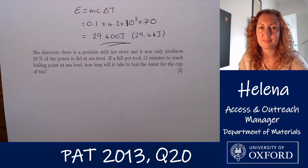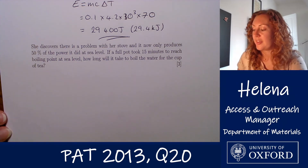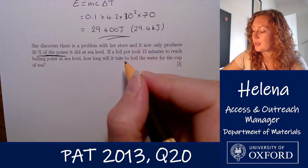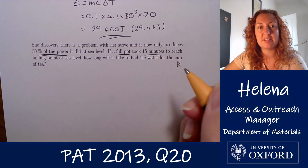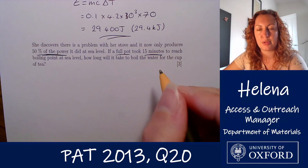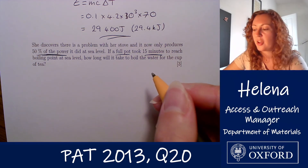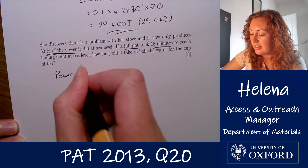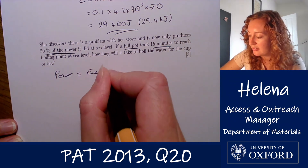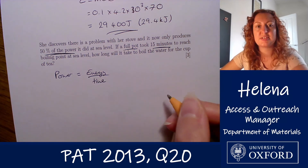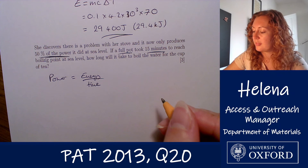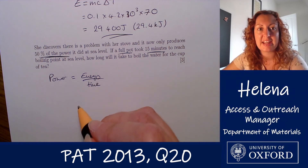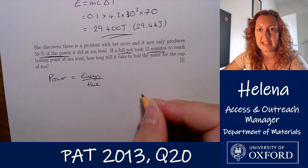Finally, she discovers there's a problem with her stove: it now only produces 50% of the power that it did at sea level. If a full pot took 15 minutes to boil at sea level, how long is it going to take to boil the water for this cup of tea at 6,000 metres? Power is defined as the energy per unit time produced by the stove. Knowing that, we can work out the power of this stove at sea level, then apply the 50% reduction to calculate the time it takes.